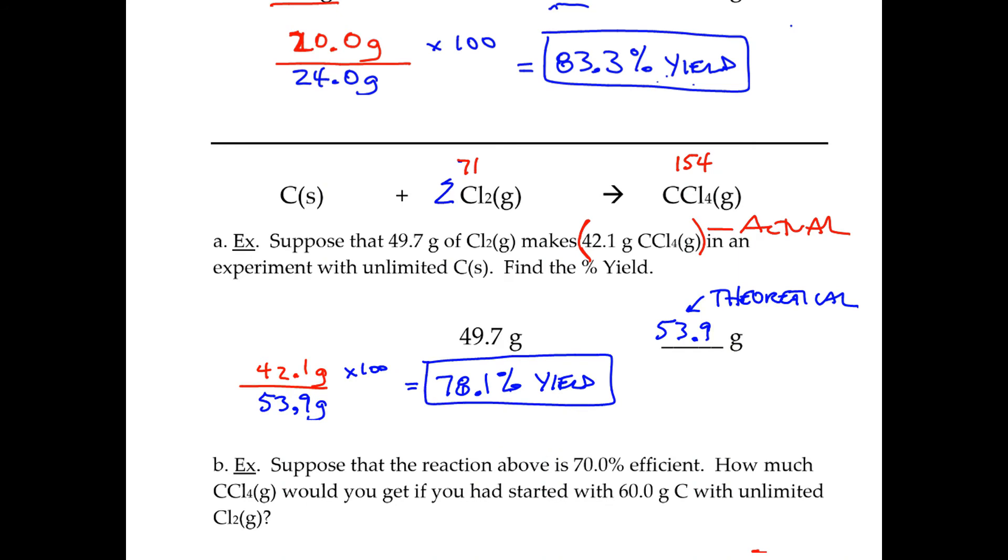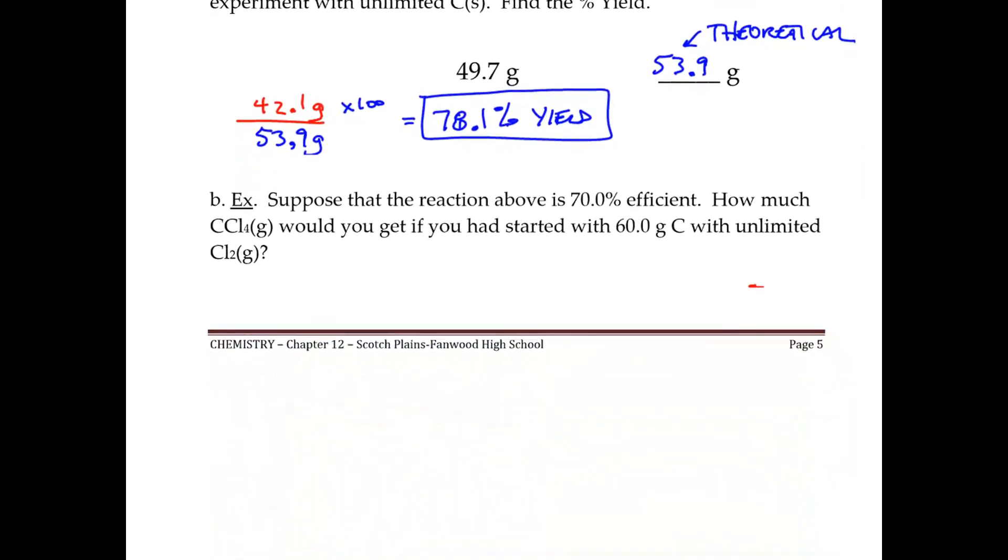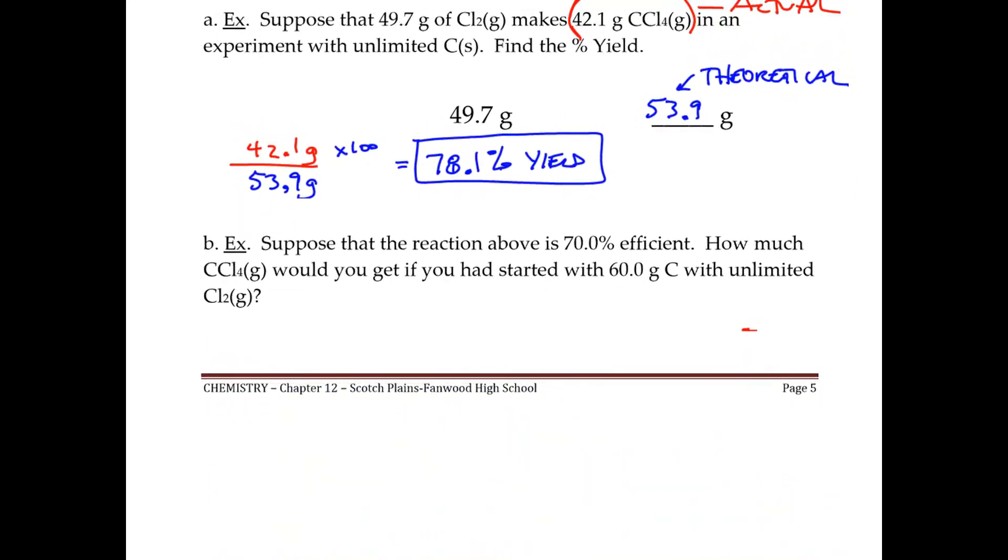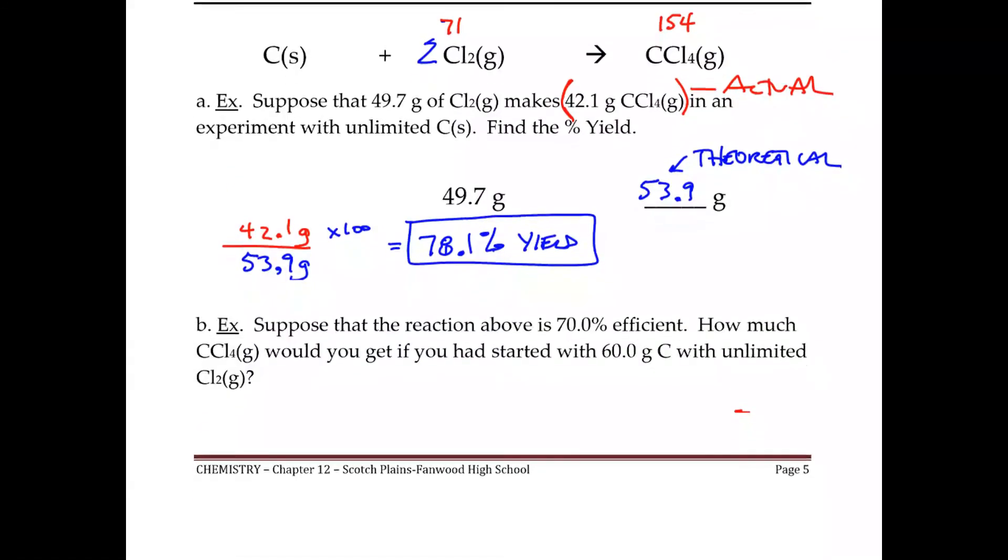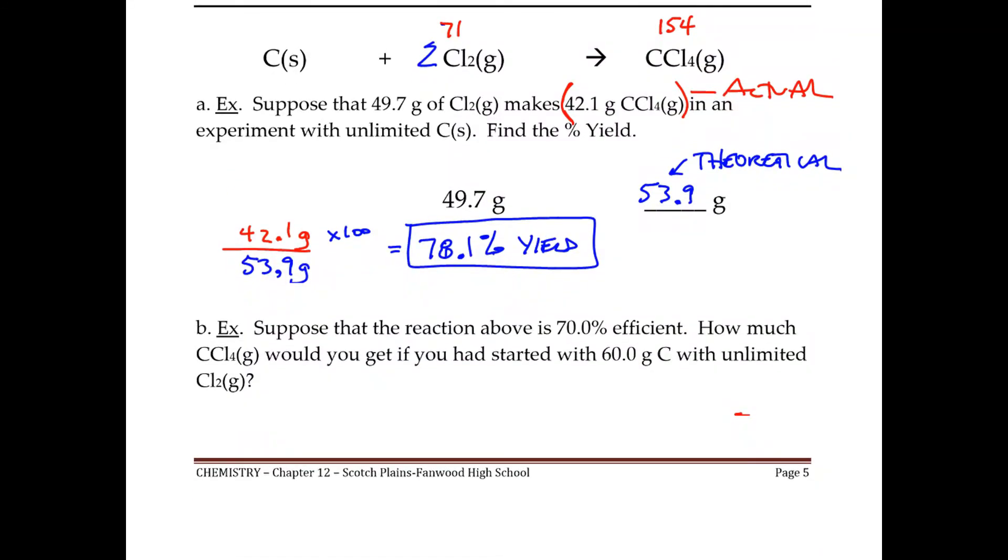Let's try the last part of this page. Now they're telling us that we have a reaction, it's the same reaction, and it says that let's suppose that it's 70% efficient. In other words, that's the percent yield. It's always going to be 70% in this reaction. So the question is, what is the actual that we're going to get? So we're starting off with 60 grams this time.